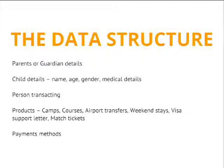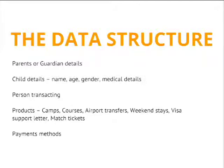The first data we captured included parents' or guardians' details, the child's details — name, age, gender, and medical details — where age is used to validate whether they're appropriate for a particular camp. Also captured are the details of the transacting person, who may not be the parent or guardian. We also needed multiple product types: courses, camps, airport transfers, weekend stays, and visa support letters, since many children come from all over the world and may require UK visas. And we needed multiple payment methods.